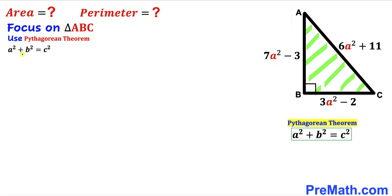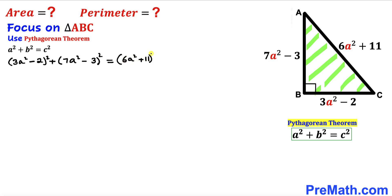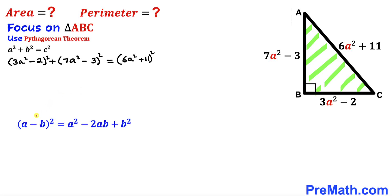Let's fill in the blanks in the Pythagorean formula. We get (3a² − 2)² + (7a² − 3)² = (6a² + 11)². Now let's recall the identity (a − b)² = a² − 2ab + b². We are going to apply this identity to the two binomials on the left-hand side.